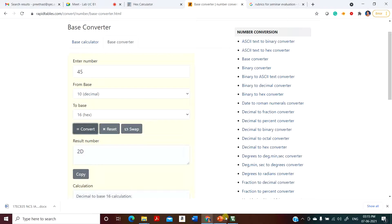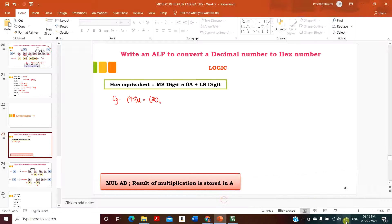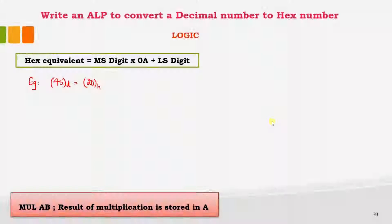You can use your calculator and check any number you consider. 45 equivalent in hex will be 2D. The logic is very simple: if you observe this decimal number, you have two digits — an upper digit and a lower digit.